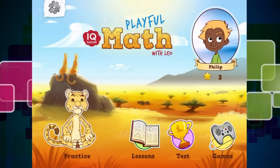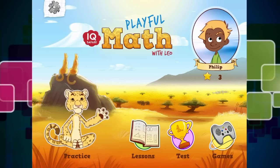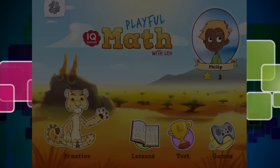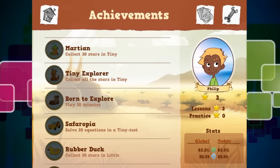It is called IQ Safari Math and you can download it from the iTunes store. First of all, what you need to do is create a character. So I have created me, which is Philip, who you can see there.